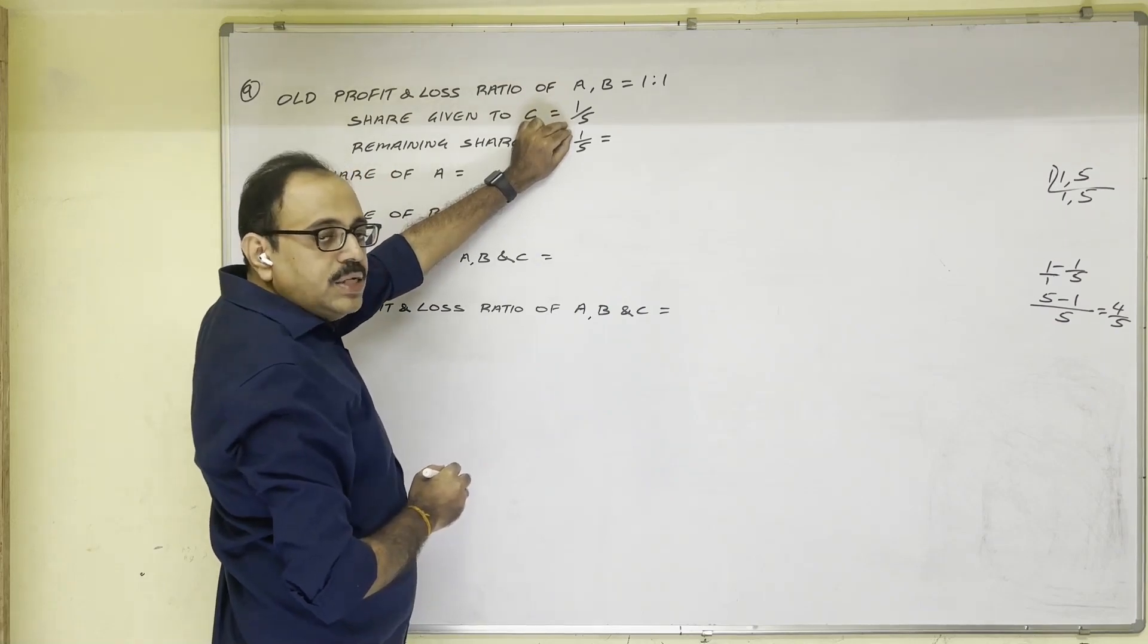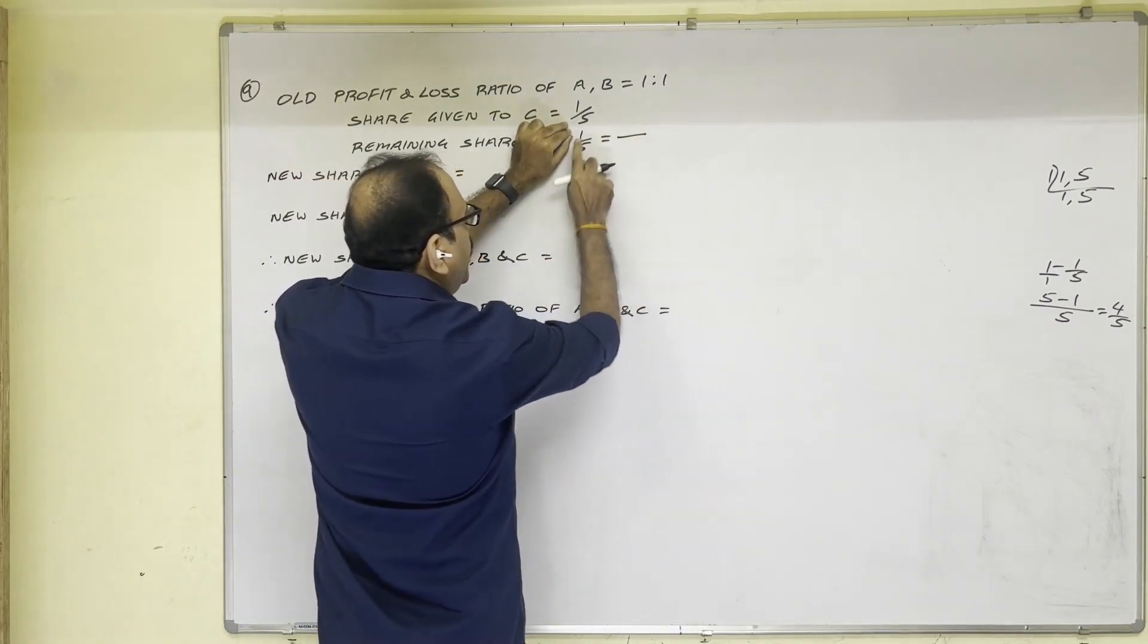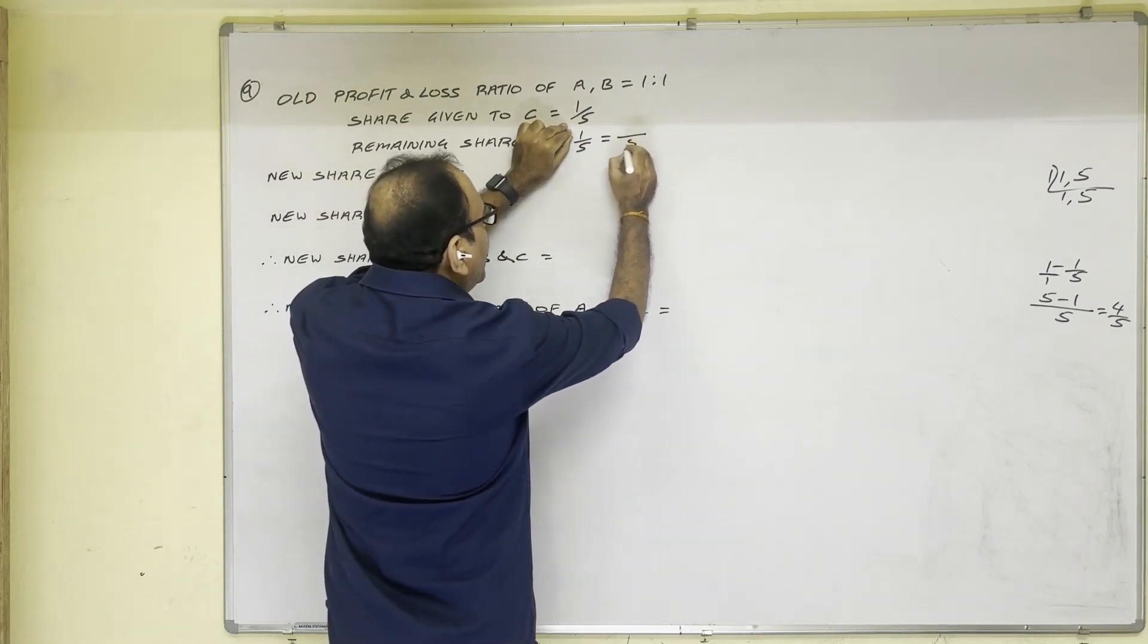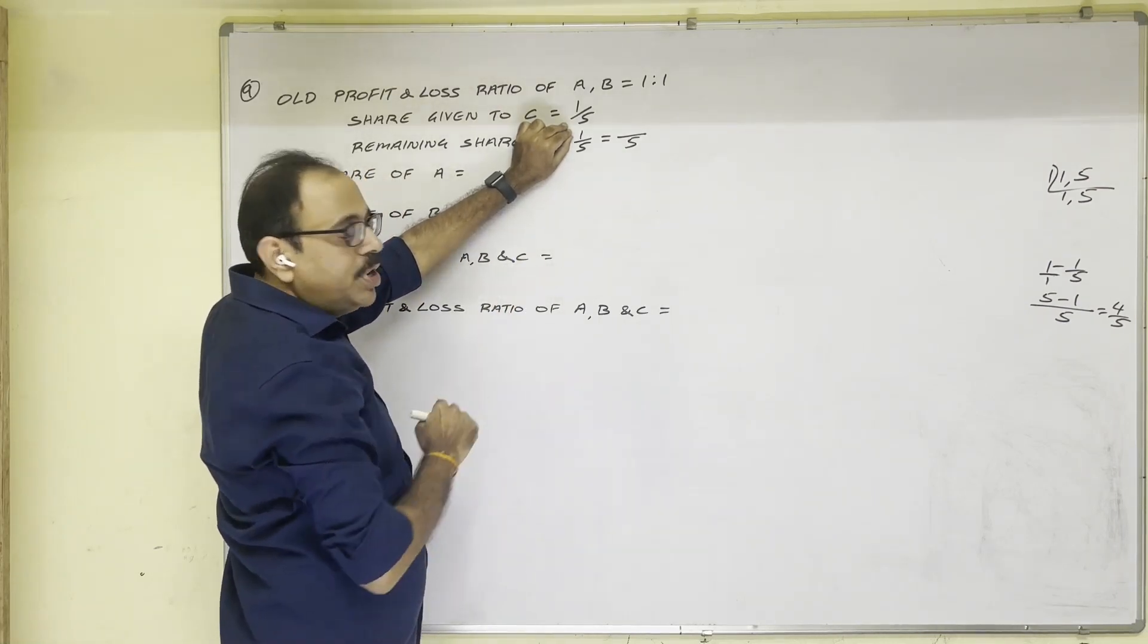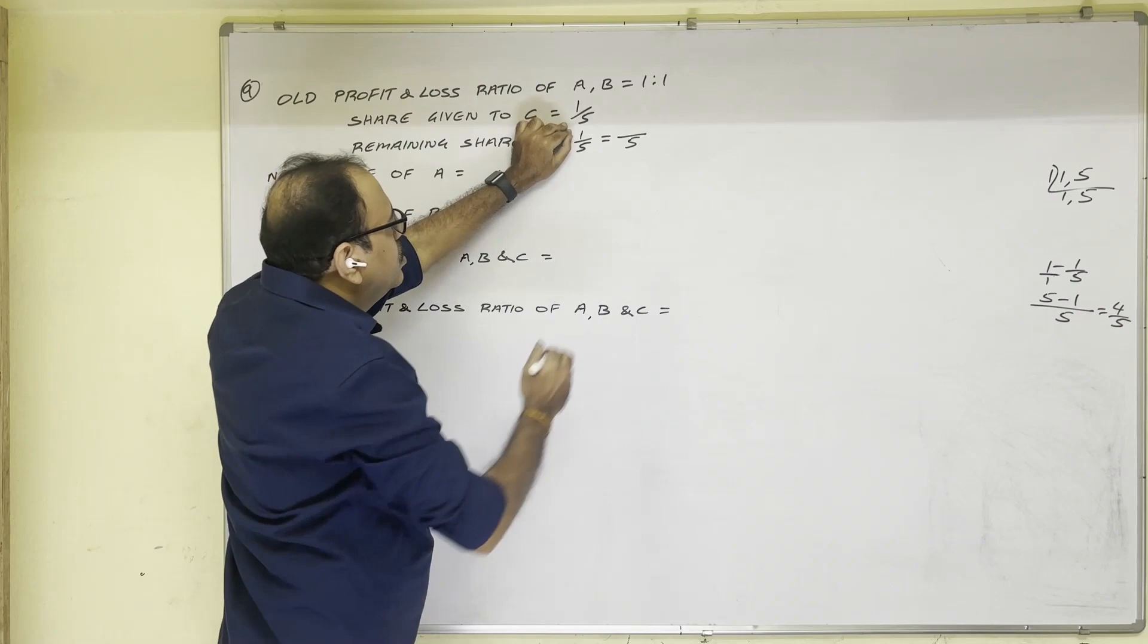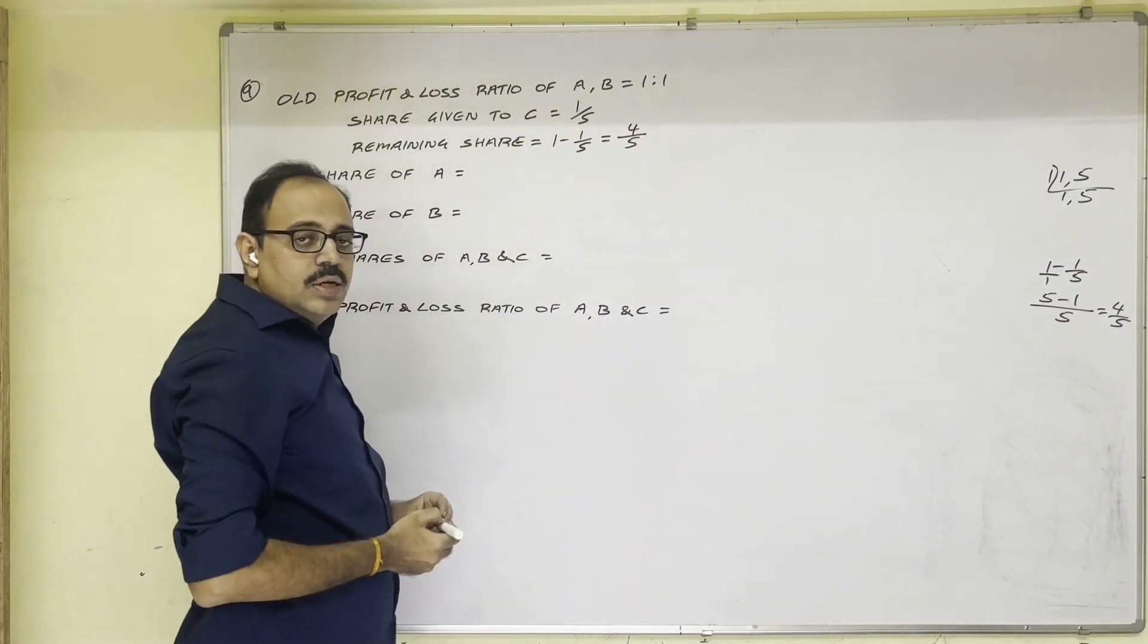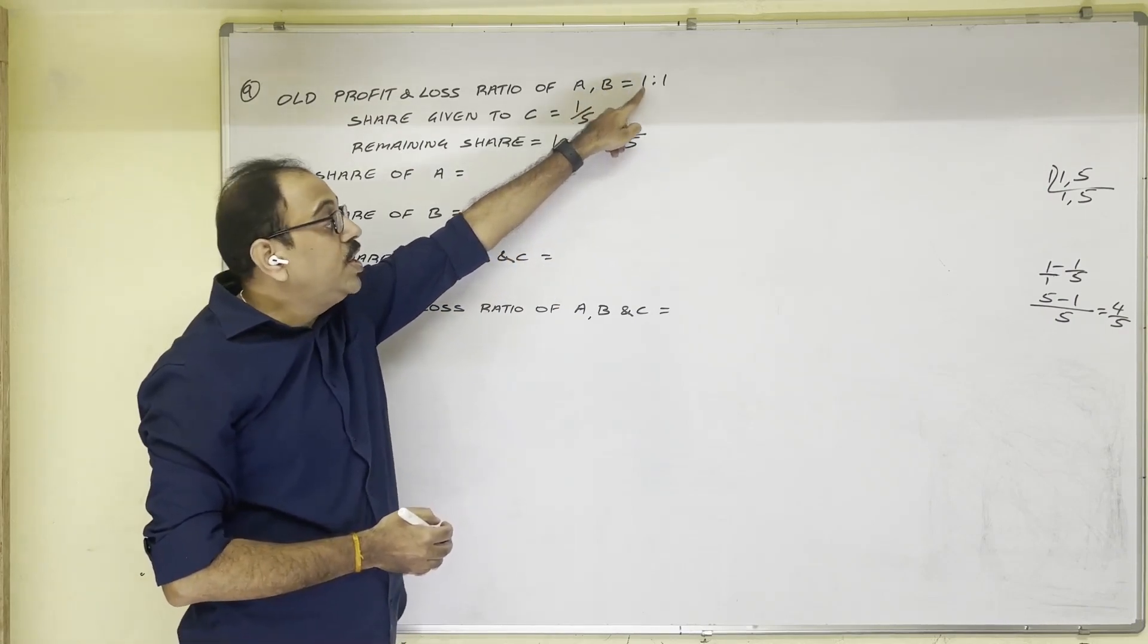But you need not to do like this. Forget about this 1 minus. 1/5. 1 is numerator. 5 is denominator. Denominator take as it is. And numerator will be denominator minus numerator. 5 minus 1 equals 4. So directly we can write like this. This remaining share A and B takes. In 1:1 ratio.